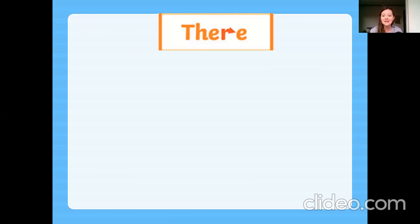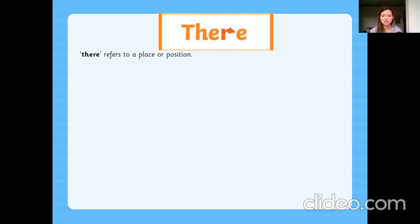The second one is 'there', T-H-E-R-E — a little bit of a different spelling. Who can notice something interesting about this word? Yes, correct — there is an arrow. You can see an arrow in the middle that represents the R. That will help you remember this spelling: T-H-E-R-E. This one is to do with a place or a position — it tells you where something is placed. And the reason for the arrow is you can imagine pointing: it's over there.